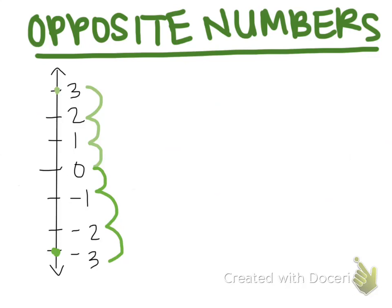Negative three is three spaces away from zero, and positive three is three spaces away from zero in the opposite direction. Because of this, three and negative three are opposite numbers.